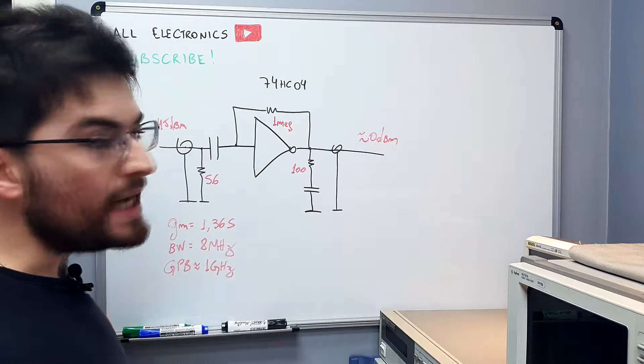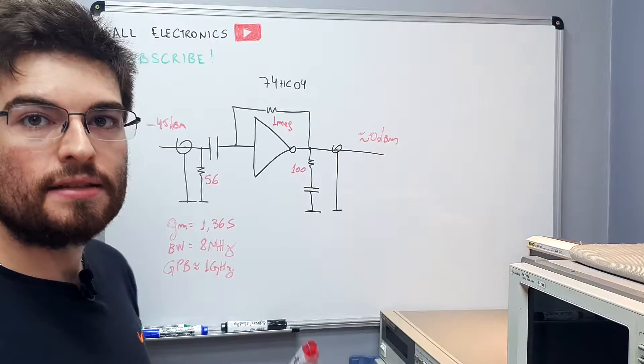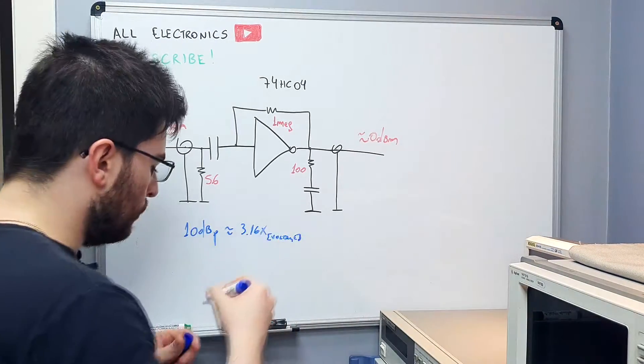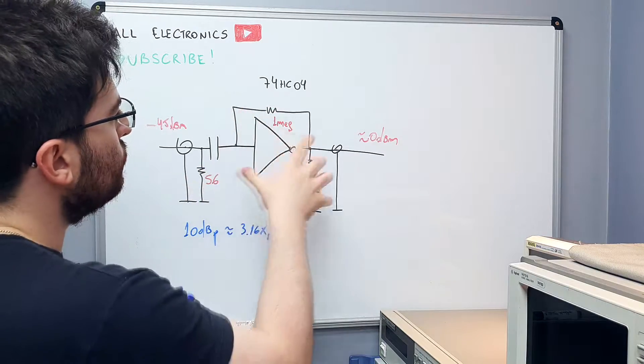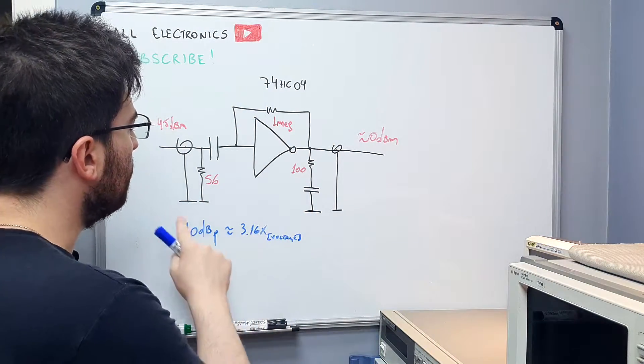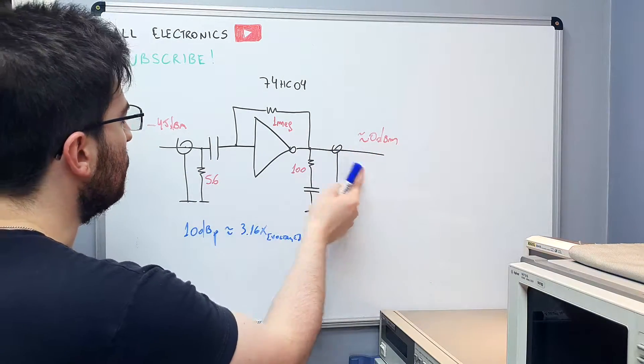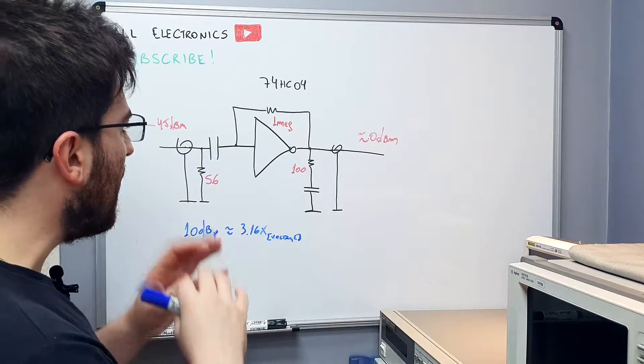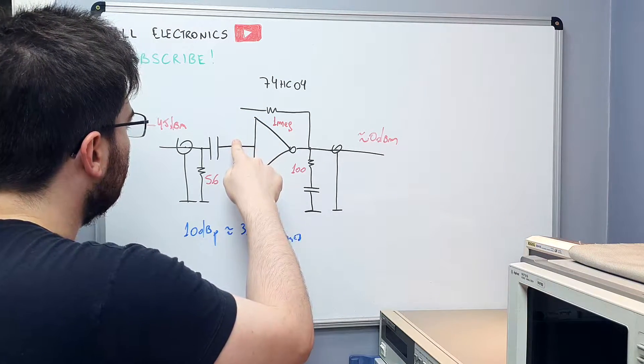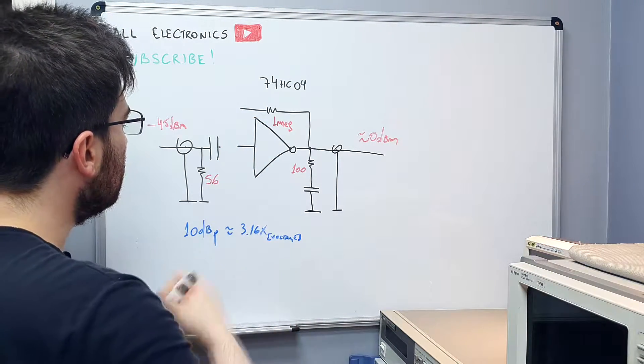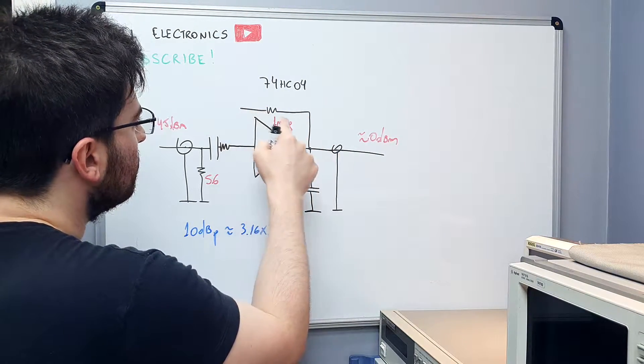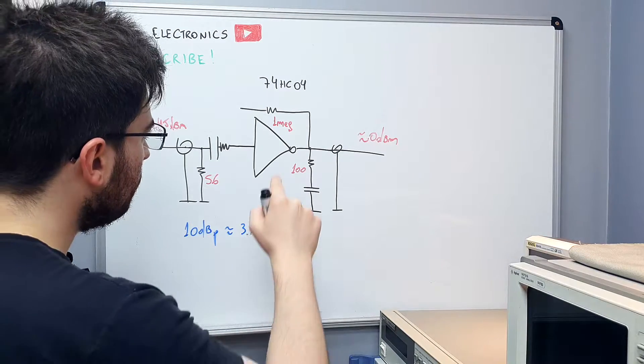To have 10 dB of power gain we need 3.16 times voltage gain. We need to control the gain of this stage to be 3.16. To have a 10 dB power gain between input and output. I think we can try to do this. We can try to put a series resistor here and change this resistor here.